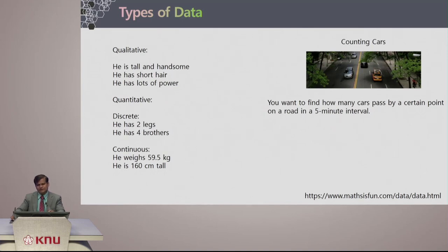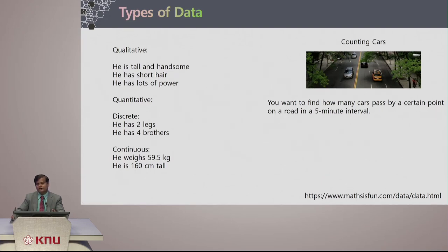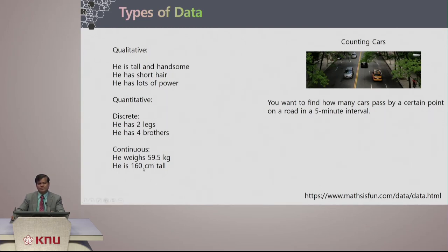Let's briefly talk about some types of data. We have qualitative data — like 'he is tall and handsome' or 'he has short hair' — these are qualitative descriptions. Within quantitative data we have discrete and continuous data. Discrete data has specific digits or numbers, for example 'he has two legs' or 'he has four brothers.' Continuous data, on the other hand, involves values like 'he weighs 59.5 kg' or 'he is 160 centimeters tall' — weight and height are continuous variables that change continuously.